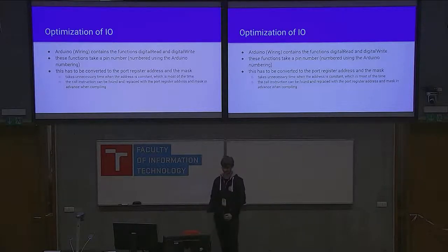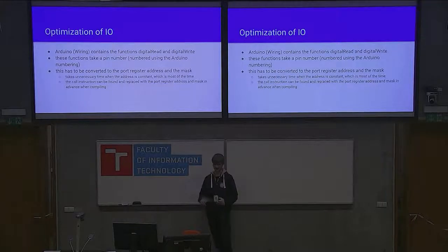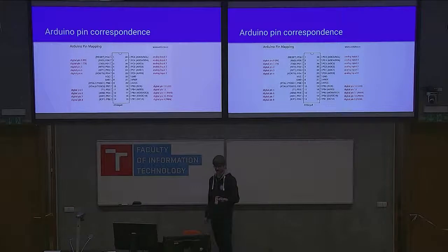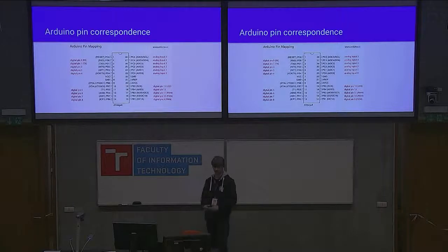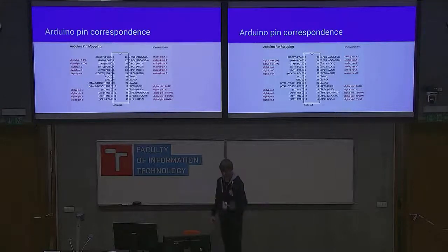Now to the optimization of IO. This concerns the functions digitalRead and digitalWrite, which take a pin number using the Arduino numbering. This has to be converted to the native way of writing to the pins. There is a picture showing that the digital pin numbers correspond to ports — it's implemented with a register that contains eight bits, and each bit is one of the pins like PC0, PC1. When you write to the digital pin numbers, this has to be recalculated each time, and this takes time.